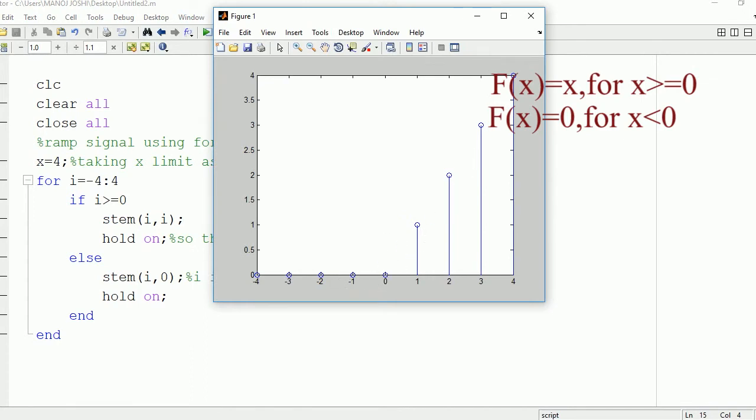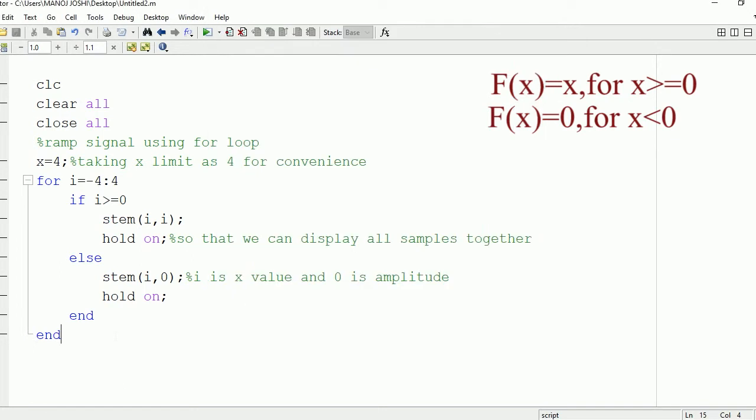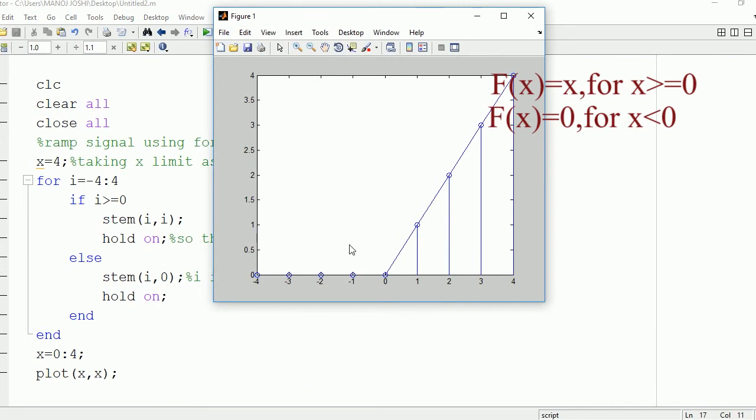Now you can also connect this signal together. This can be done using the plot command. Let's take an interval of x from 0 to 4. We're gonna make use of plot command: plot(x, x). Now after doing this, we're gonna click on run and see the output. Here we can see the line is plotted.